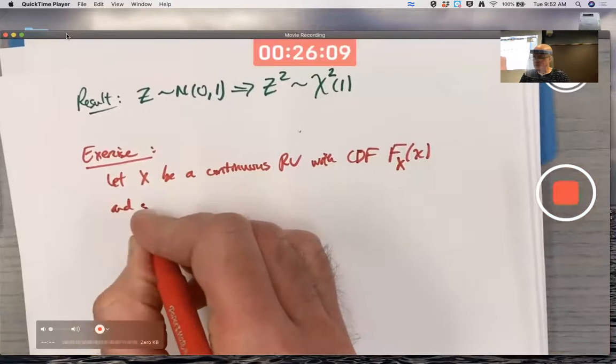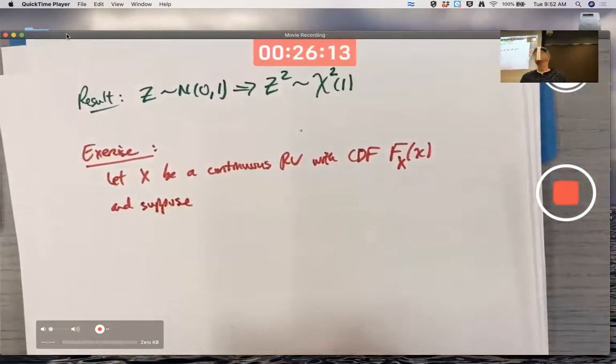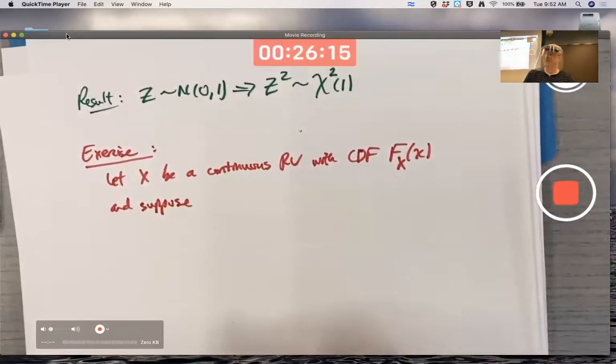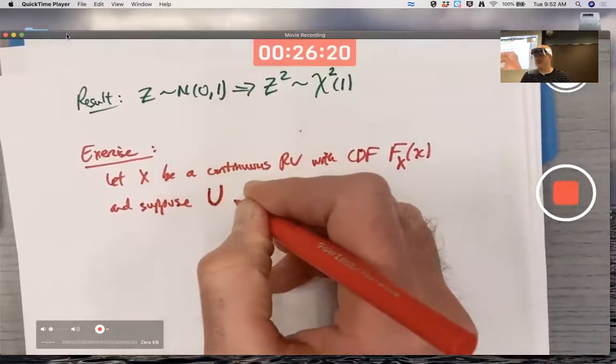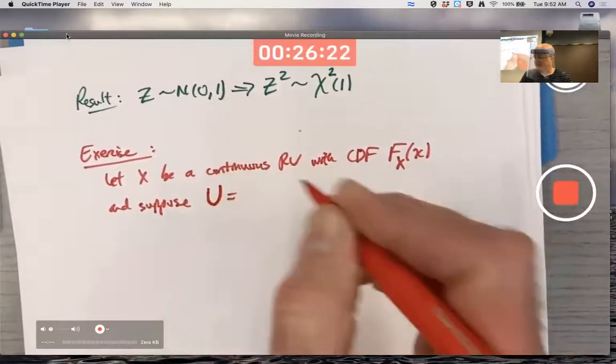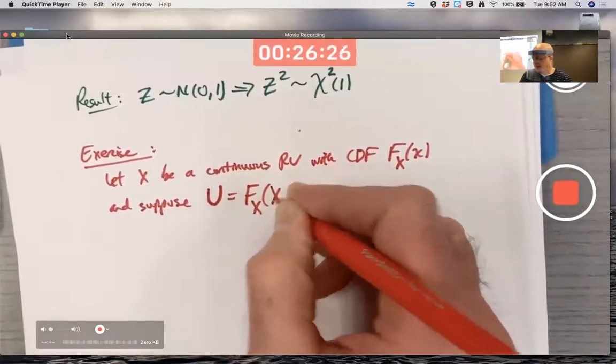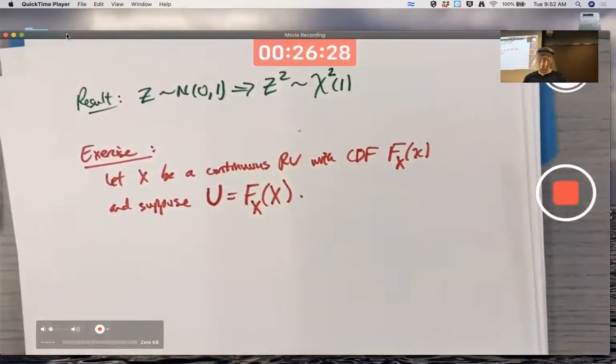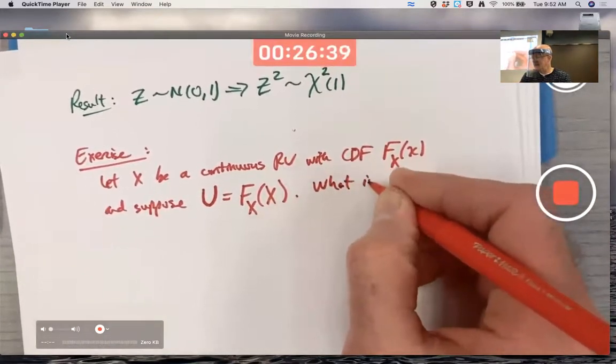Suppose I've got a new random variable, I'm going to call it U instead of Y this time, that equals capital F sub X of capital X. The question is, what is the distribution of U?